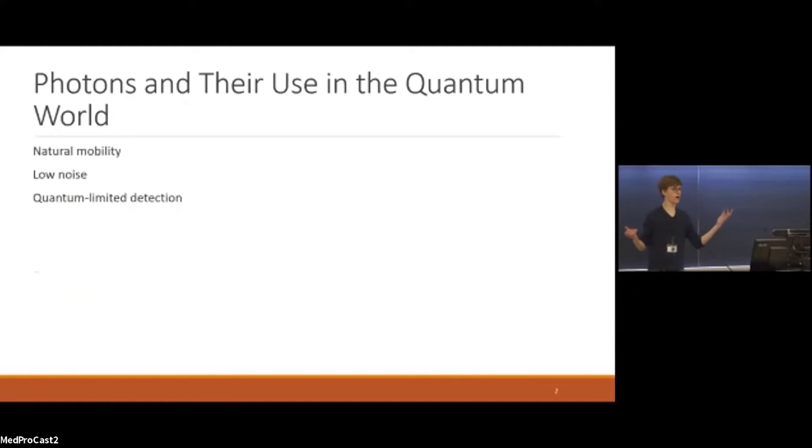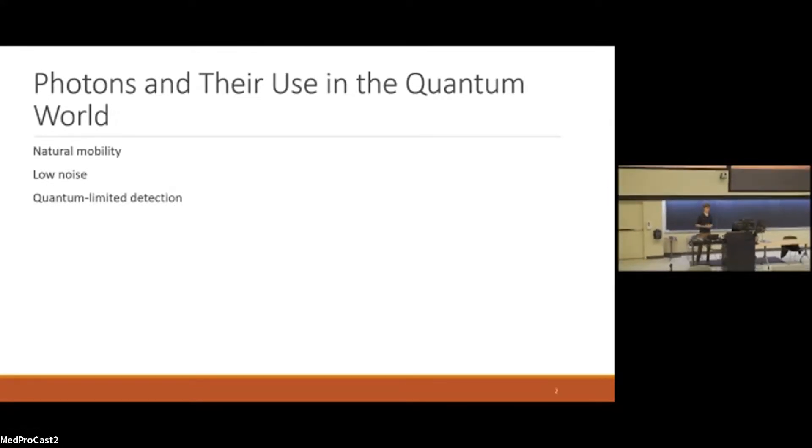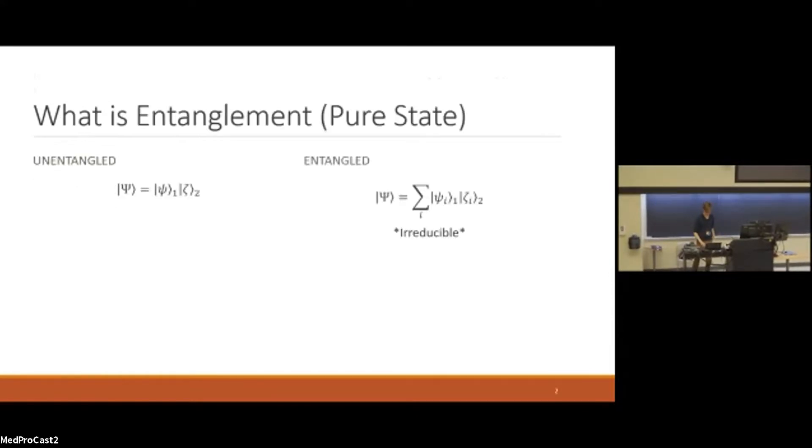So why do we want to use photons in the quantum world? They have natural mobility. Something like electrons, they need to be basically moved around. This has an ease of movement, low noise, quantum limited detection. It's quite ideal for pretty much all quantum tasks.